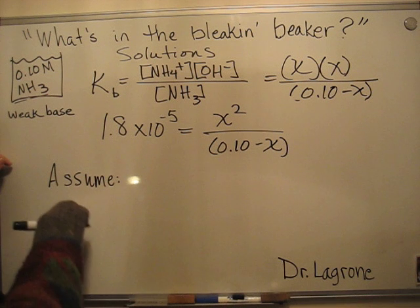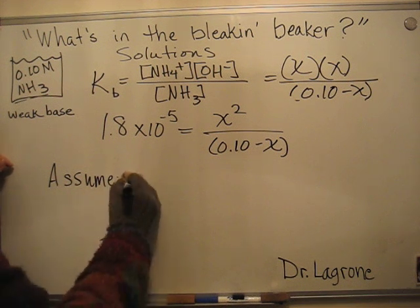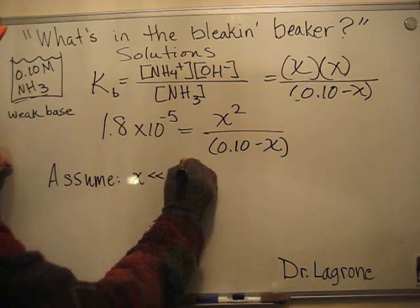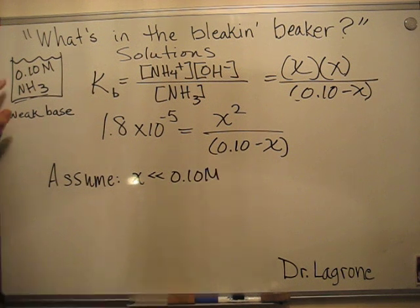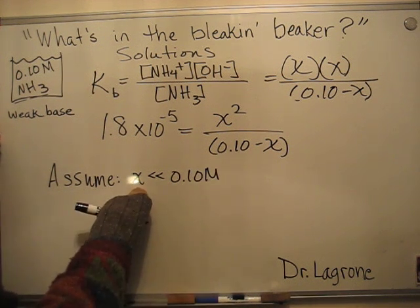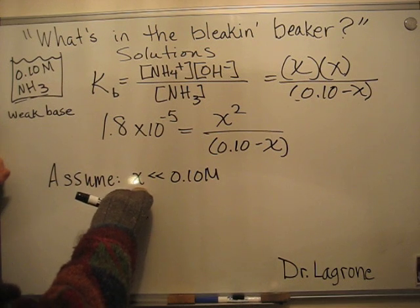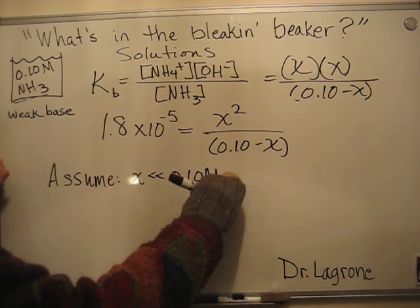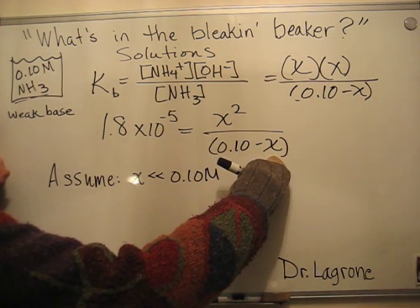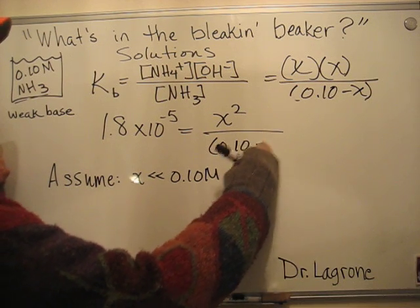For this video, we're going to assume that X is very small when compared to the initial concentration of the ammonia. Essentially, not much of it is going to dissociate. So if I make this assumption, then 0.10 - X is essentially 0.10.